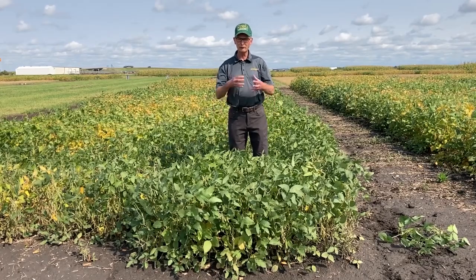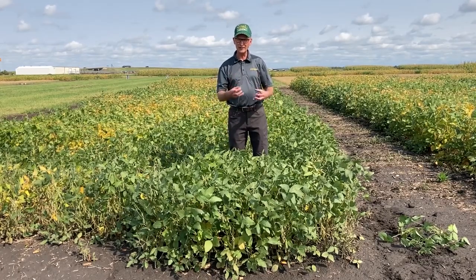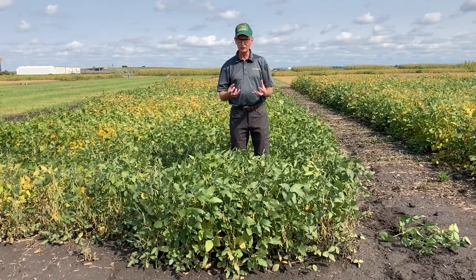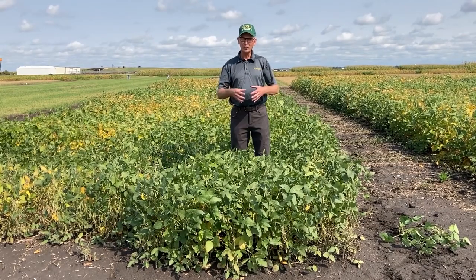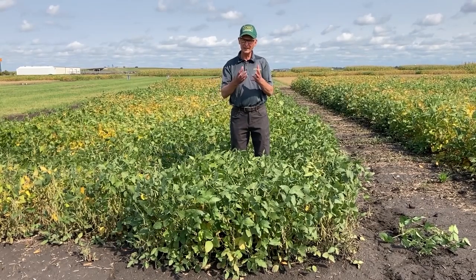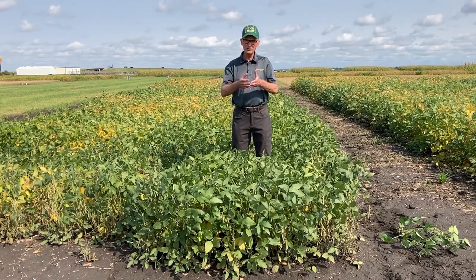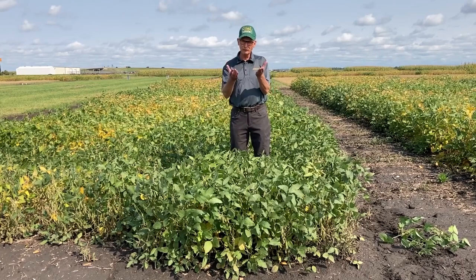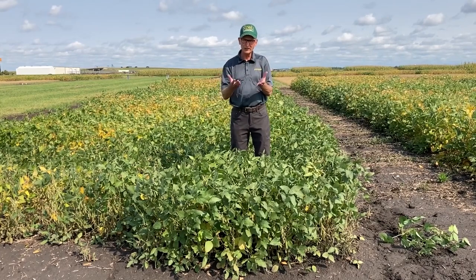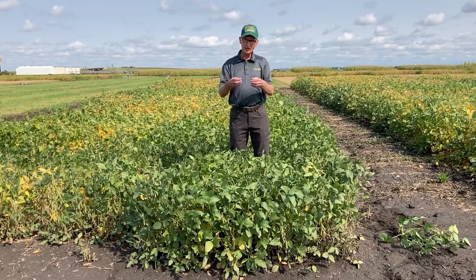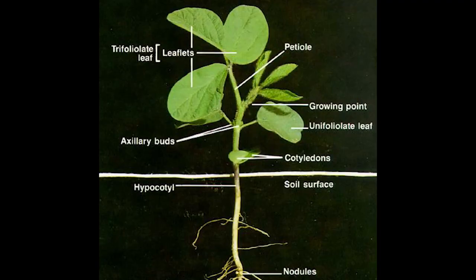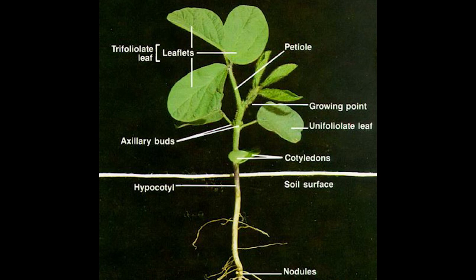When we put the seed in the ground, it first swells and starts to take up moisture. After a few days, it will start to germinate. As the seed comes out of the ground, it will have the first part called the cotyledons. After the cotyledons, we get two other leaves called the unifoliates, and after the unifoliates, we get the true leaves — the trifoliate.